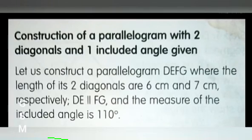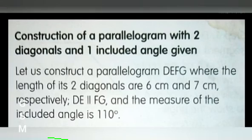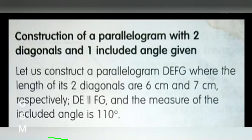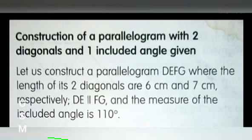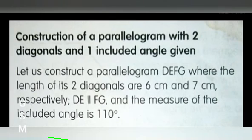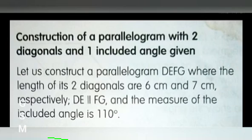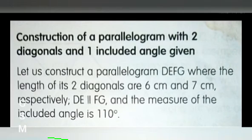Next, let us see how to construct a parallelogram with two diagonals and one included angle given. Construct a parallelogram DEFG where the length of its two diagonals are 6 cm and 7 cm respectively, DF is parallel to EG, and the measure of the included angle is 110 degrees.